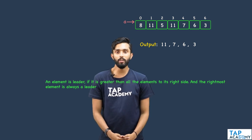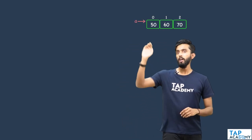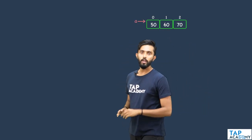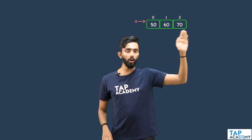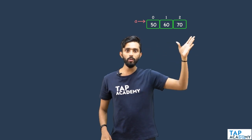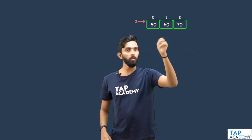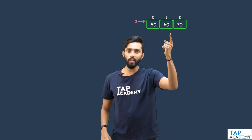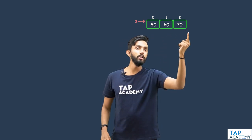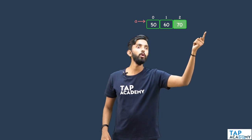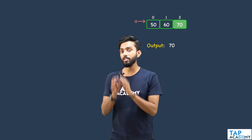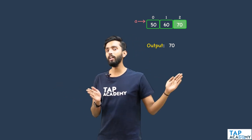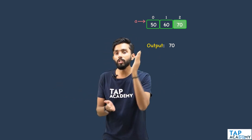Let's take another example. Assume the array is 50, 60, 70 — sorted in ascending order. Common sense tells us 50 and 60 can't be leaders because the next element is always greater. 70 is the last element, and the rightmost element is always a leader. So in a sorted ascending array, only the rightmost element is the leader.